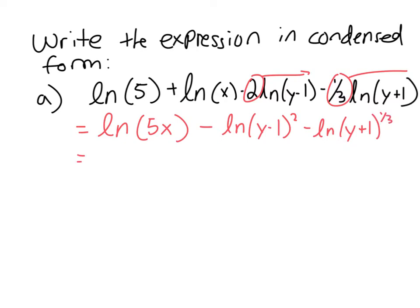Now I can, both of these are minus, right? So they're both going to be on the bottom of a fraction. So if I were to rewrite this, I could write it as ln of 5x over y minus 1 squared times y plus 1 to the 1/3 power.